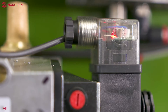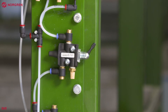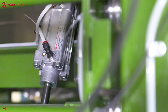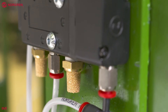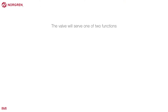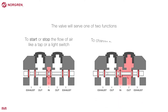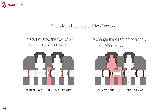A valve blocks or diverts the flow of compressed air within a system. This is usually to either move a cylinder, air tool or air motor directly, or to move a pilot that acts as a signal to activate another part of the system. In practice, the valve will serve one of two functions: to start or stop the flow of air like a tap or a light switch, or to change the direction of airflow by driving one of two outlets.